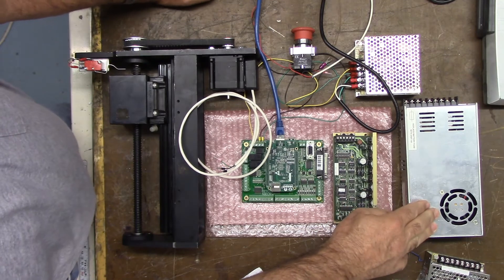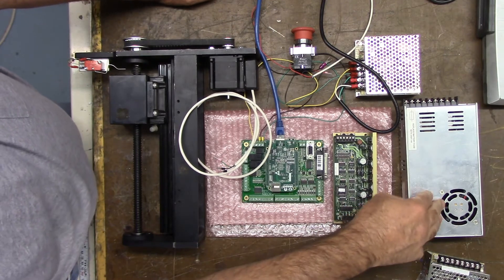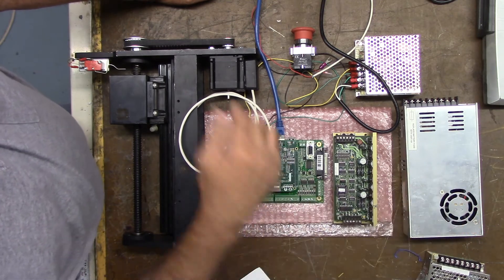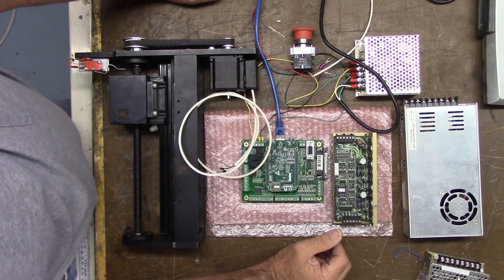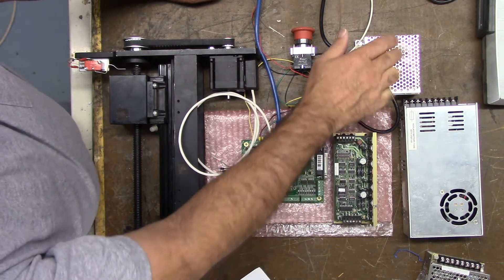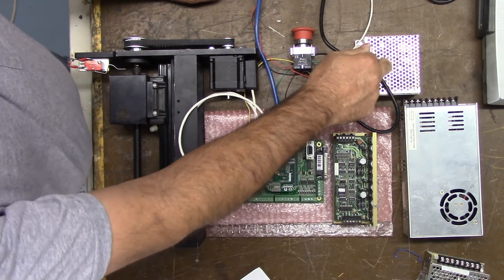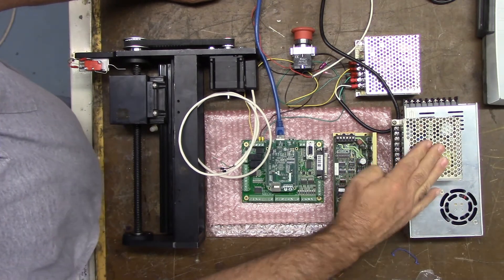This is the stepper power supply. It's a 24 volt power supply. It's way more than enough that we need to drive this little bitty NEMA 23 stepper motor. This is the original 24 volt power supply that came with Acorn. I will not be using it. Instead I'll be using this one.